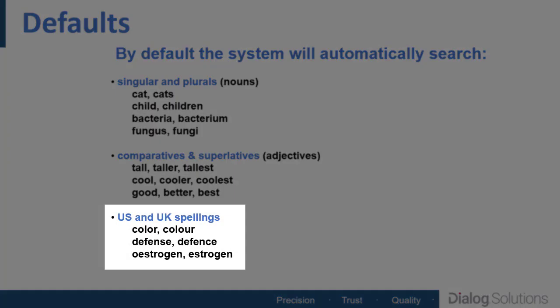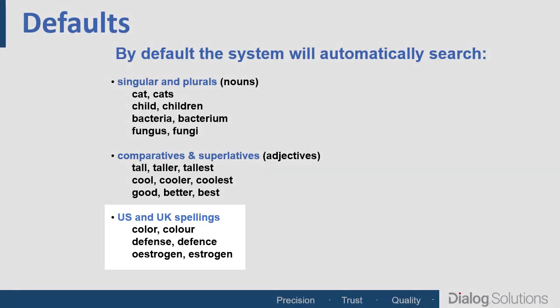Another default feature is that Dialog will search for both American and British spellings of English words. You probably know, for example, that the word color is spelled differently in America and in the UK, and this is true of more words than you might think, like estrogen or pediatric in the medical field. You can just search for either the American or British spelling, and Dialog will look for the word both ways. Dialog gets records from all over the world, so this is another very useful feature.